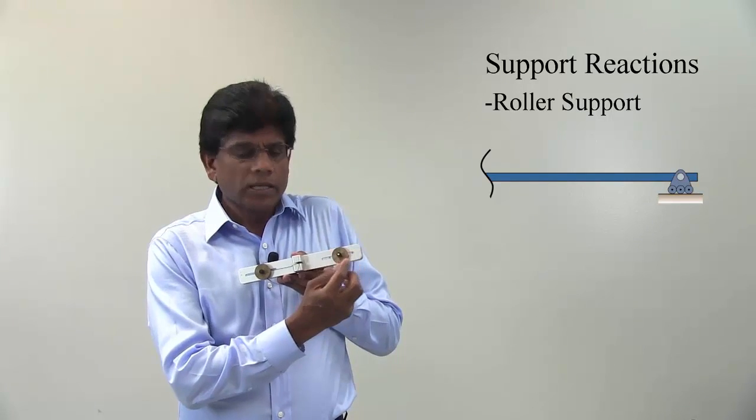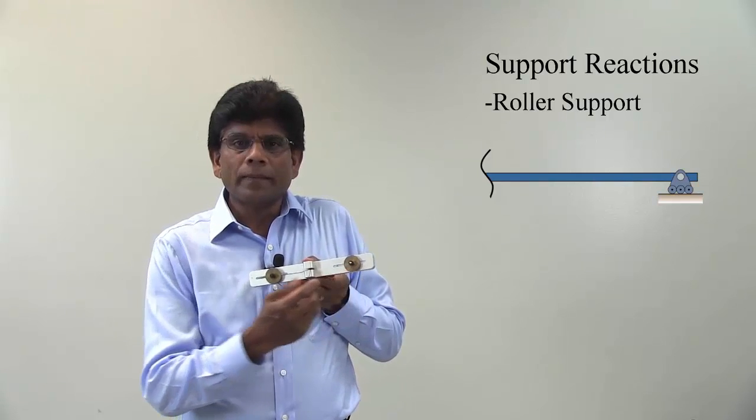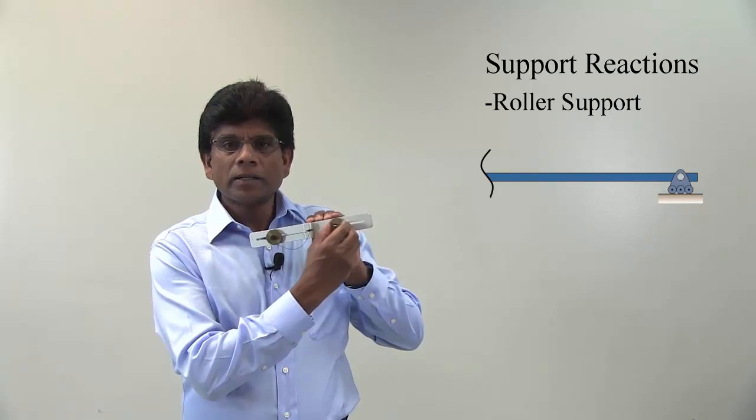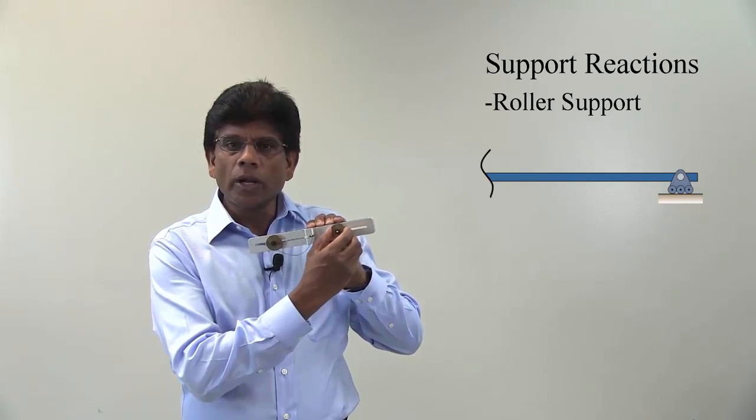You can see there are some parts in the slot. In this case, you see a disk connected to a pin. And as you can see, these parts can rotate. You can see this pin can rotate and slide along the slot. Now, this is a roller support.